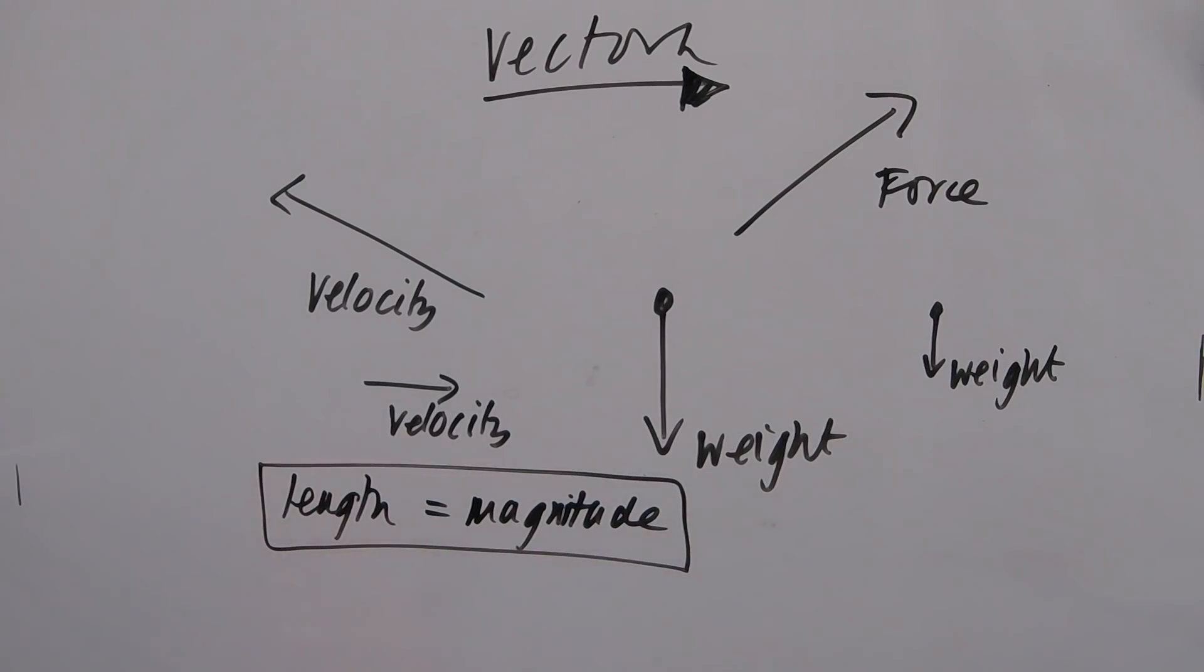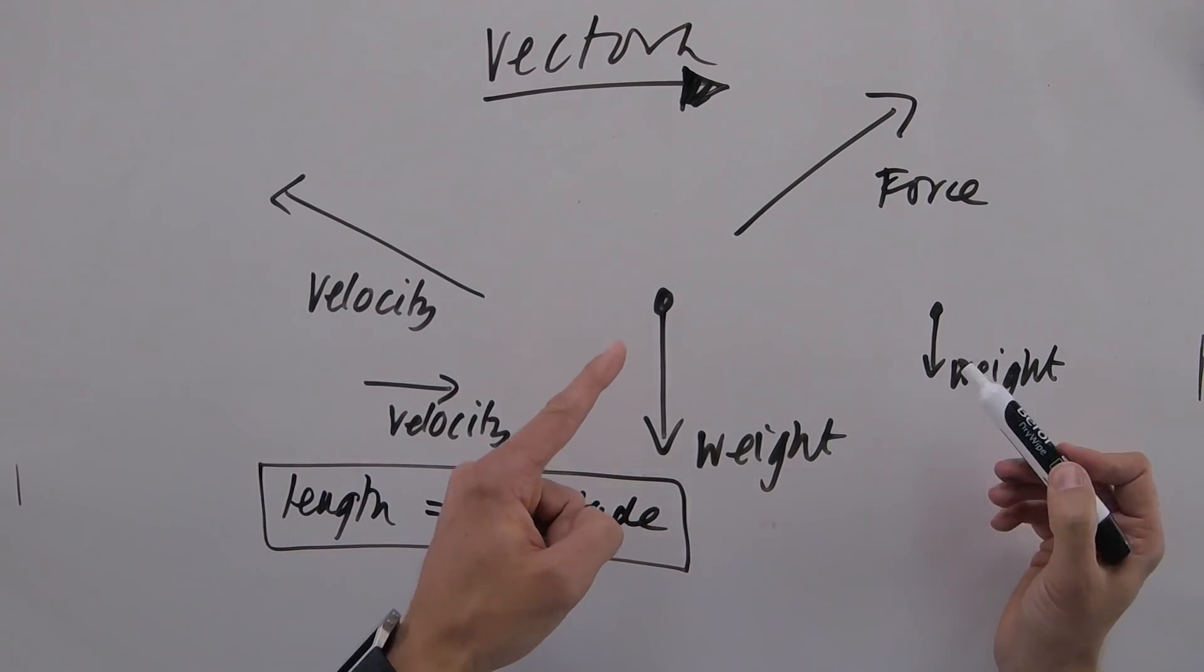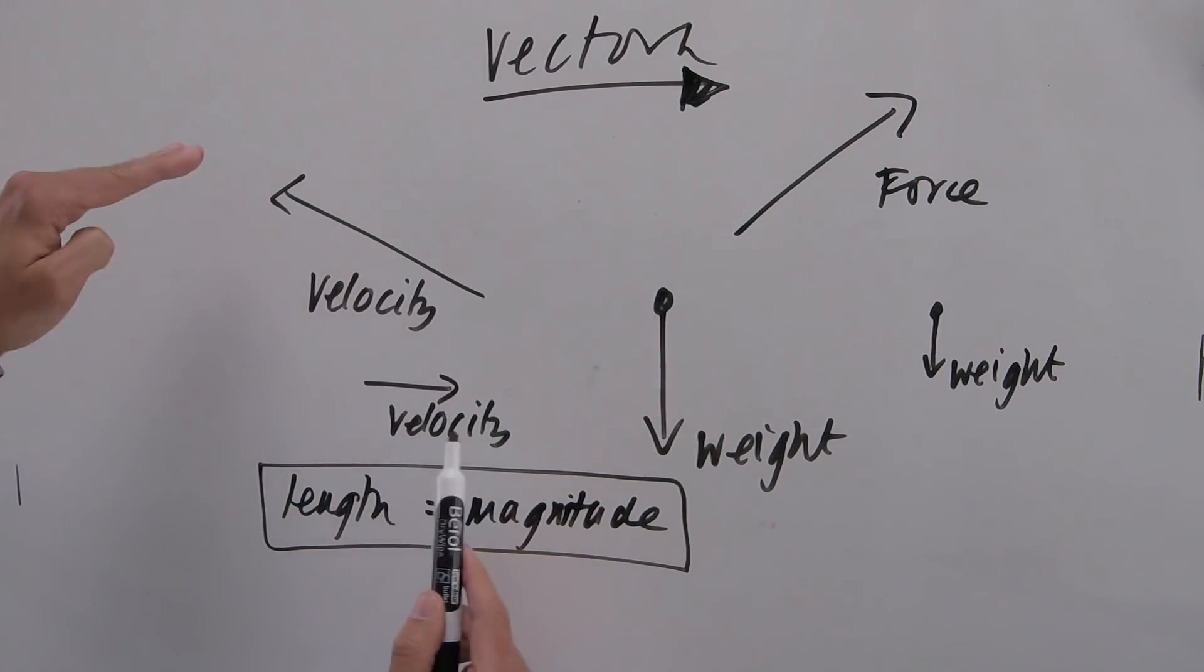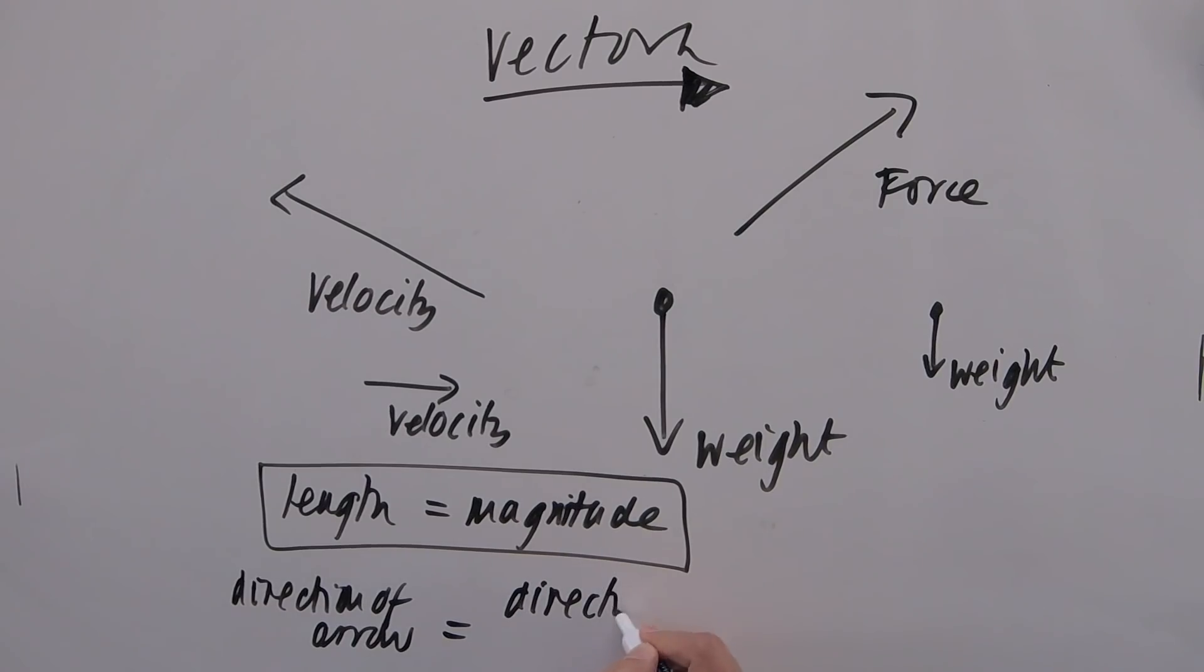That key point. Now the other one is dead obvious as well. Now we've got two weights, but these are both going in the same direction. These velocities are going off in different directions. So the direction of the arrow tells you the direction of the vector quantity. So I'll just write that in here. Direction of arrow equals direction of quantity. Nice easy start to forces for GCSE.